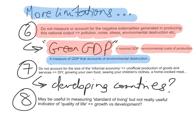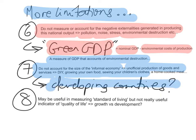National income statistics don't account for the size of the informal economy, which is the unofficial production of goods and services — things like DIY, do-it-yourself, growing your own food, sewing your own children's clothes. All of these are very common in developing countries and are not accounted for in national income statistics.